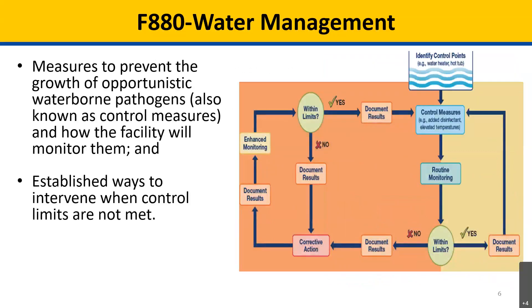Whether the facility has measures in place to prevent the growth of opportunistic waterborne pathogens, also known as control measures, and how the facility will monitor them. For example, control measures can include visible inspections, use of disinfectants, and/or temperature control that may require mixing valves to prevent scalding. Monitoring may include testing protocols for control measures, acceptable ranges of control measures, and documenting results of testing.